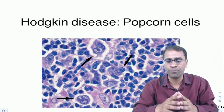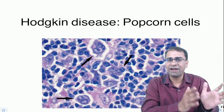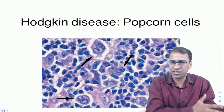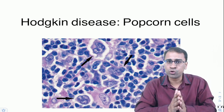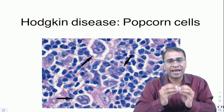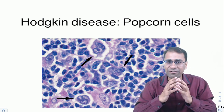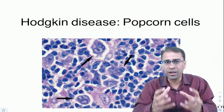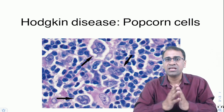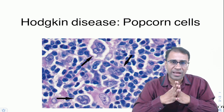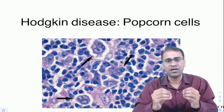T-cell lymphomas are also important. Cutaneous T-cell lymphoma (Sézary syndrome) shows Sézary cells. Adult T-cell leukemia/lymphoma shows a cloverleaf pattern. Anaplastic large cell lymphoma shows the hallmark cell — a horseshoe-shaped or doughnut-shaped cell — and is positive for ALK and CD30.